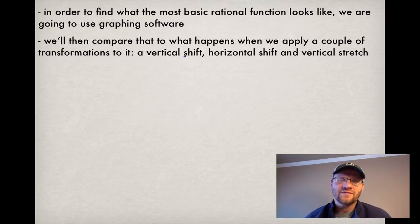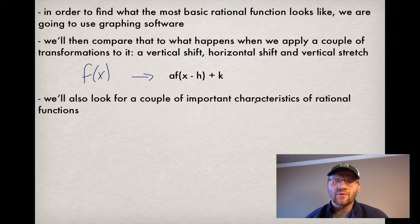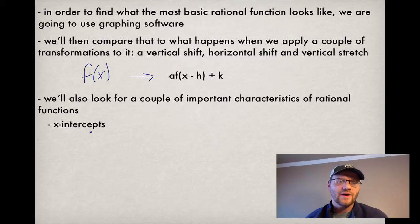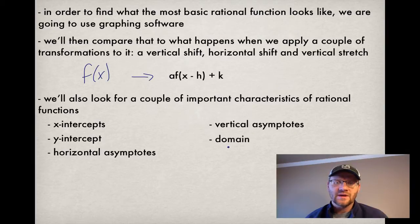We'll then compare that to what happens when we apply a couple of transformations to it. We're going to look at a vertical shift, a horizontal shift, and a vertical stretch. So if our original function was just plain old f of x, then our new transformed function would look like a times f of x minus h plus k. Remember that a is your vertical stretch, h is your horizontal shift, and k is your vertical shift. We'll also look for a couple of important characteristics of rational functions while we're at it: our x-intercepts, y-intercept, horizontal asymptotes, vertical asymptotes, domain, and range.